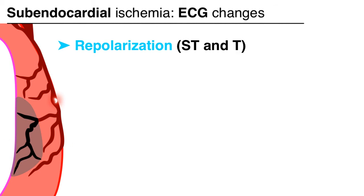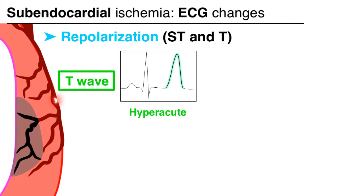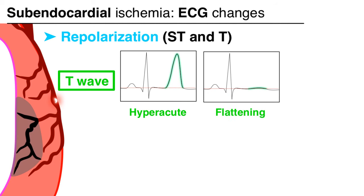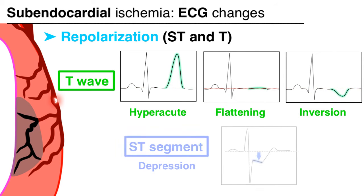The changes which will commonly be seen are hyperacute T waves or peaked T waves, T wave flattening, T wave inversion, and/or ST segment depression.